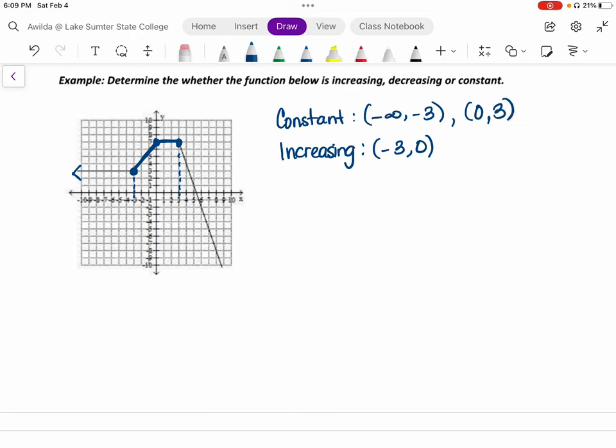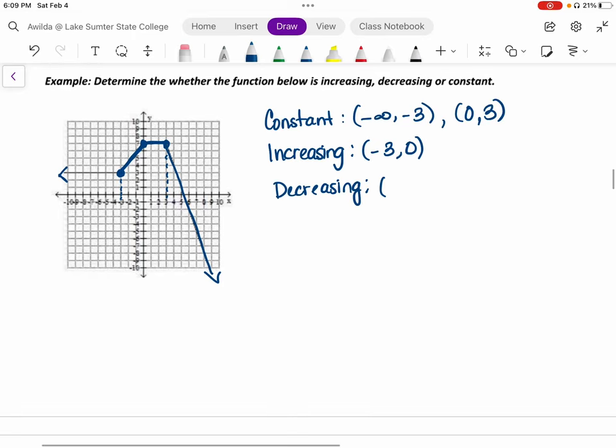And the last piece of the graph, we see decreasing behavior, and that looks like it's happening from x equals 3 to infinity, because there's no upper bound. Alright. Thank you.